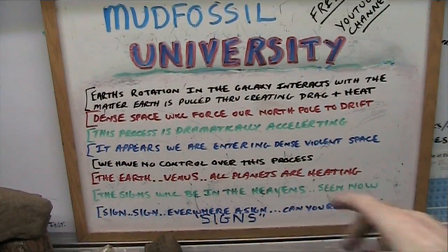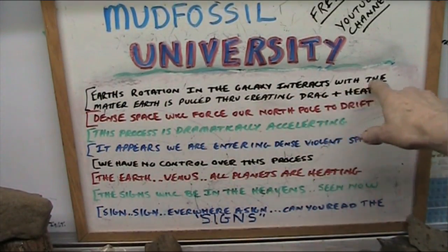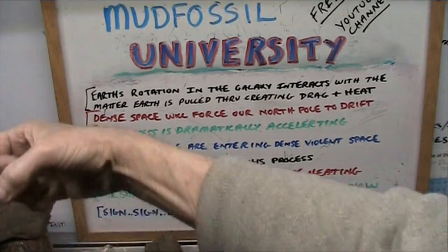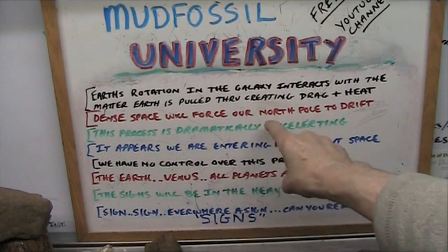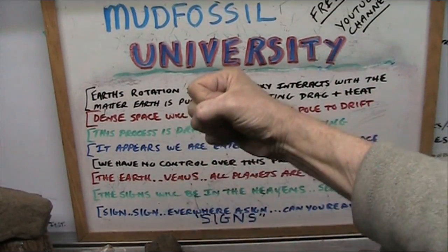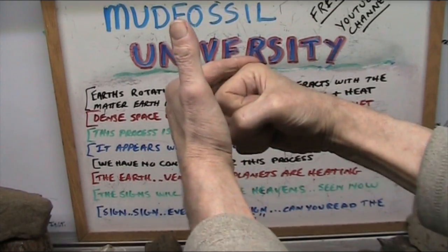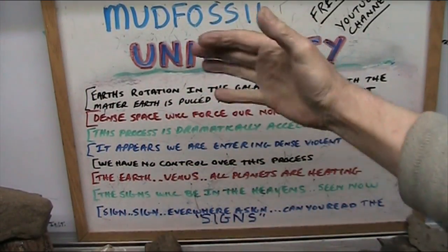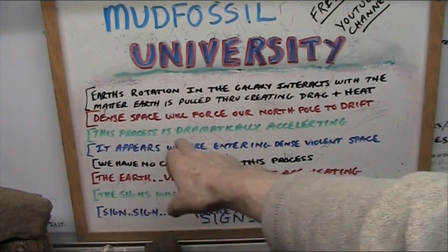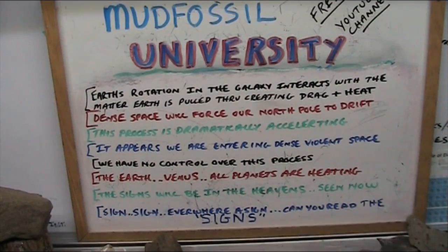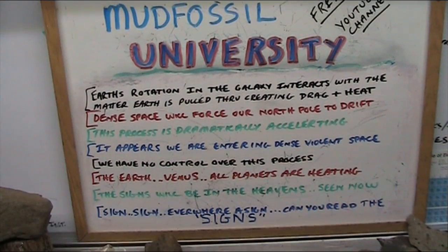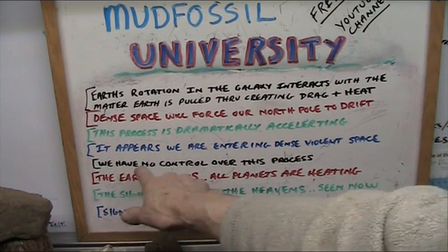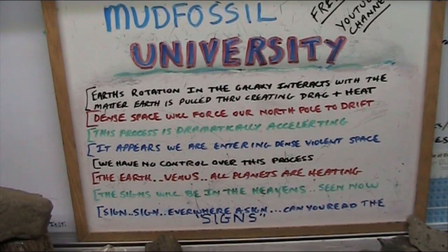So, to put it all down on paper here: Earth's rotation in the galaxy interacts with the matter earth is pulled through, creating drag and heat, just like I showed you, because we are being pulled through dense space now. Dense space will force our north pole to drift. As we come crushing through, the push back is going to literally create a ripple against the surface and move the north pole away. This process is dramatically accelerating. We're obviously going into denser space — it appears we are entering a dense, violent area in space. How dense it will get, I have no clue. But we have no control over this process — none whatsoever. Whatever happens now will happen, so you better be ready.